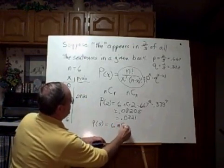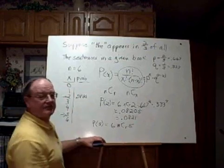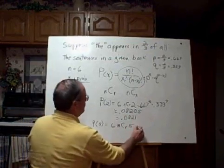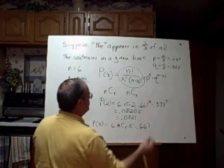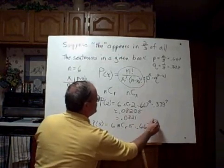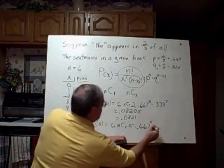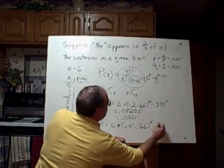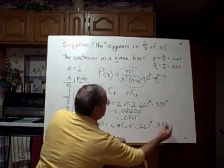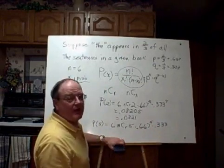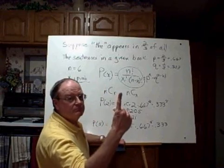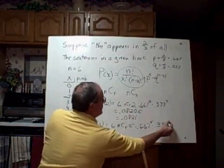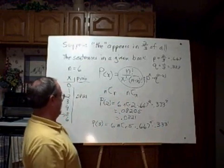Once again, this is going to be 6 NCR 5, five successes, times the probability of 0.667 raised to the fifth power because there's five successes, times the probability of failure, 0.333, raised to—well, how many failures have we got? We're saying only one page didn't have 'the' in the sentence that we're looking at. There we go.